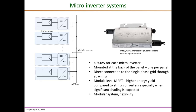Microinverters also offer a great level of flexibility by enabling modular system design. If you want to scale up the ratings of the PV system, all you have to do is add another module with the integrated microinverter, whereas scaling up is not so easy with a string inverter design. The elimination of DC wiring is a main advantage.